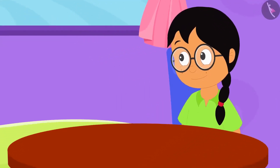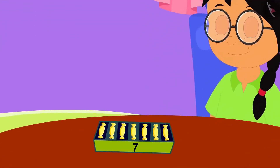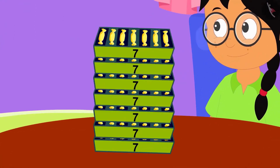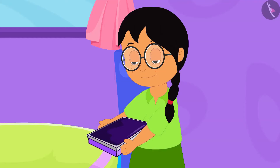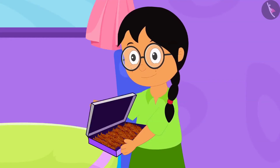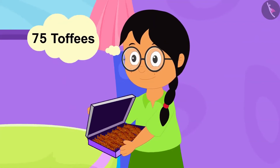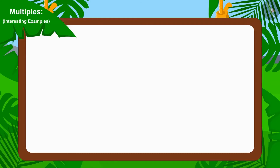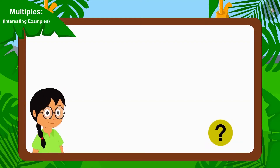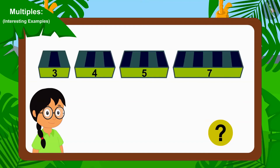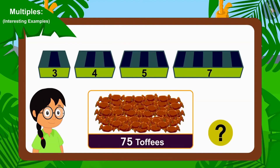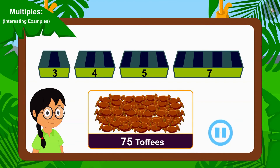Meenu quickly made groups of 7 toffees and filled 49 toffees in 7 boxes. Now, Meenu opened a chocolate toffee packet brought by her uncle. She found 75 toffees in this packet. Can you tell which of the groups of 3, 4, 5 or 7 can Meenu use to distribute these 75 chocolate toffees equally? If you want, you can stop the video and find the answer.